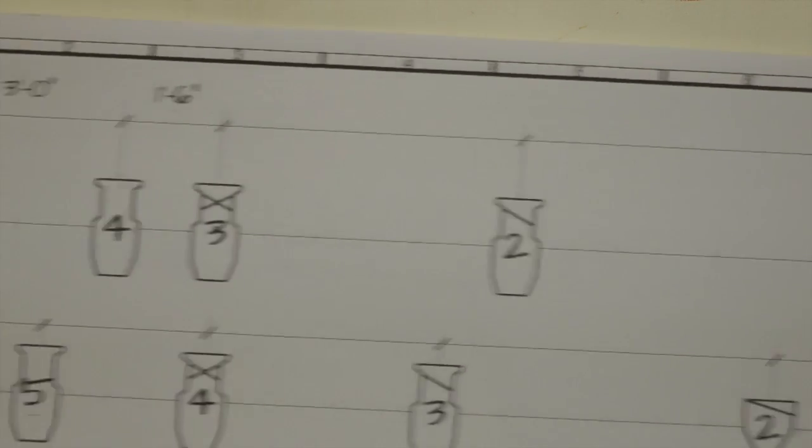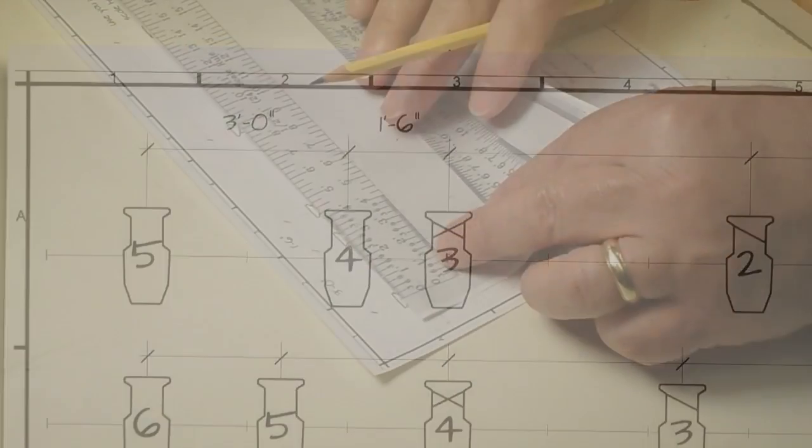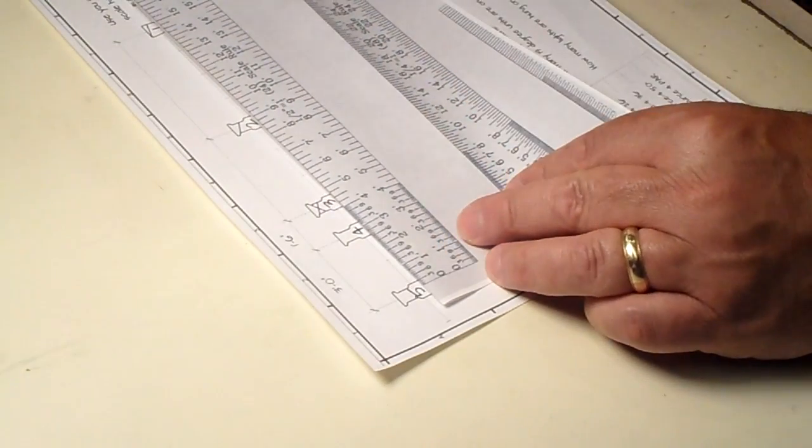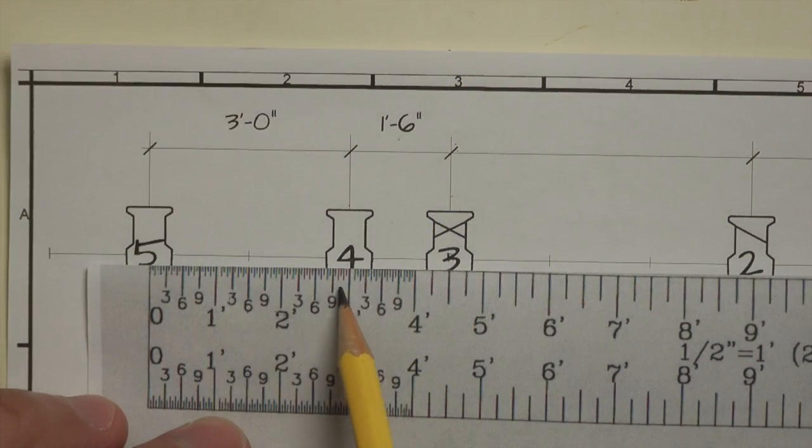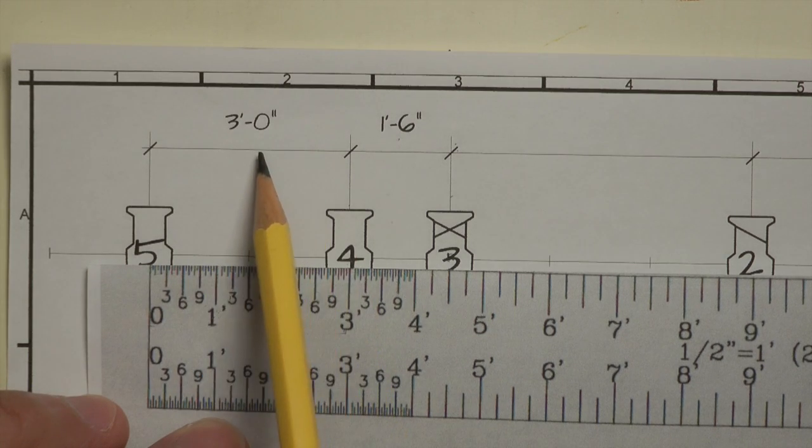This is in half-inch scale. We use our half-inch scale there. If we put our scale ruler here and we put the zero here at the middle of our lighting unit number five, we'll see that over here in the middle of number four is three feet. Zero, one, two, three feet. So the distance is three feet.